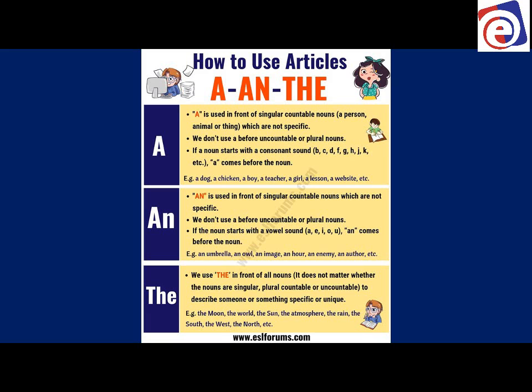'An' is used in front of singular countable nouns which are also not specific. We don't use 'an' before uncountable or plural nouns. If the noun starts with a vowel — a, e, i, o, u — 'an' comes before the noun. So we don't say 'and dog' or 'and chicken.' If the noun starts with a vowel sound, we use 'an' instead of 'a': an umbrella, an owl, an image, an hour. They may not start with a vowel letter but they start with a vowel sound.